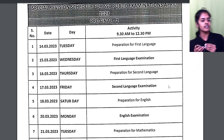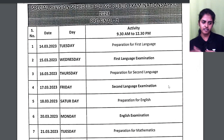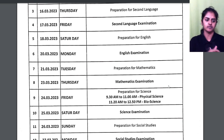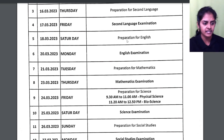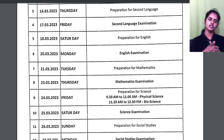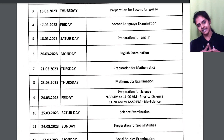19th is Sunday. On 20th you will write the English exam. Then 21st you will prepare for Maths. On 23rd you will write the Maths exam — there is some holiday in between. Then 24th you will prepare for Science and 25th you will write the Science exam.